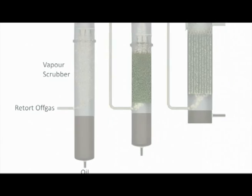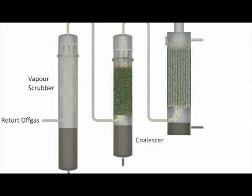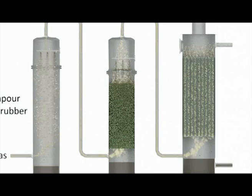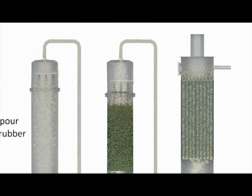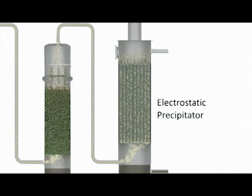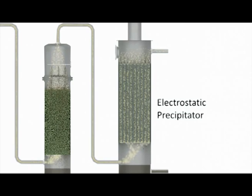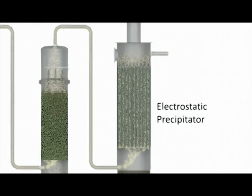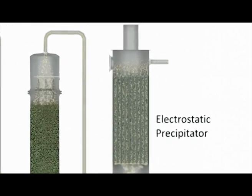In a second stage, the coalescer, the mist-laden gas moves through a packing which allows recovery of more oil. The gas then flows to electrostatic precipitators, where a series of electrically charged separation plates ionizes the liquid particles, separating oil and water from the gas.